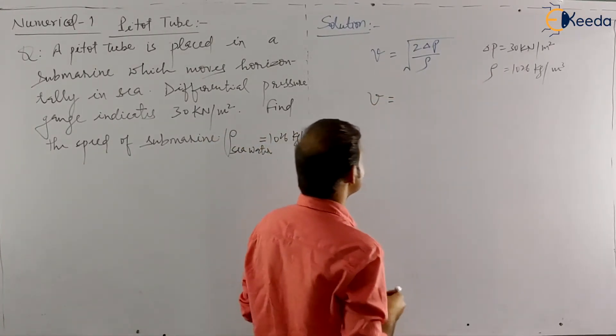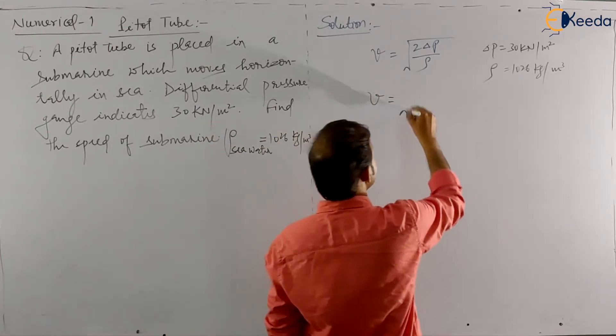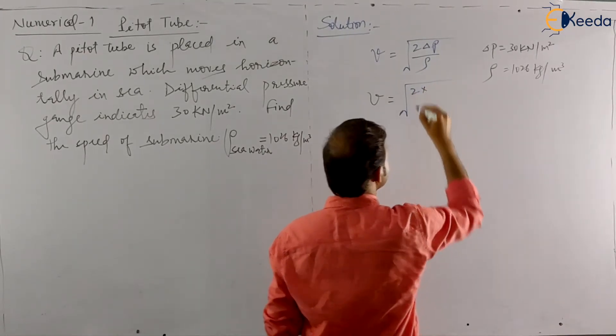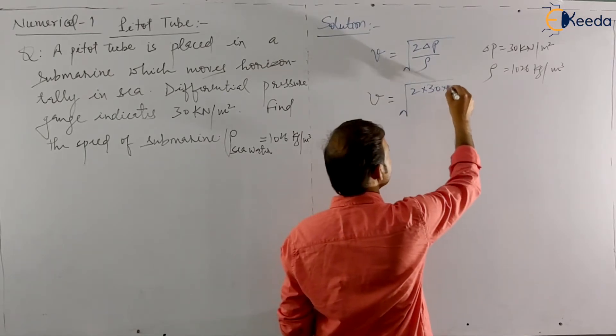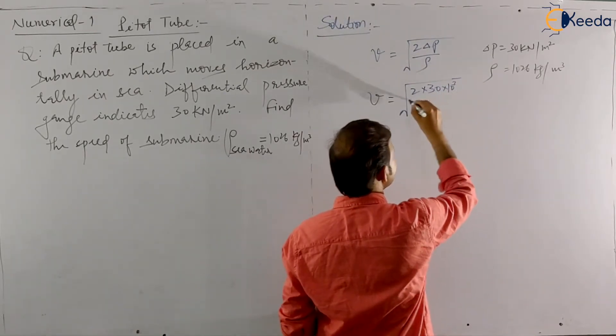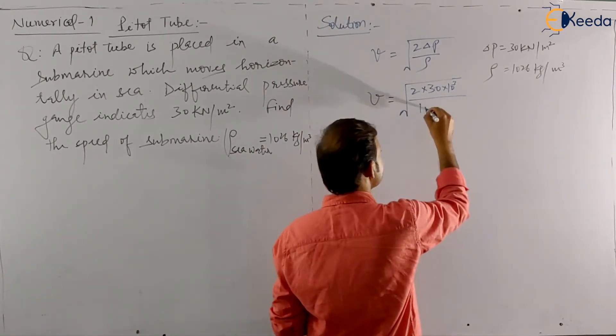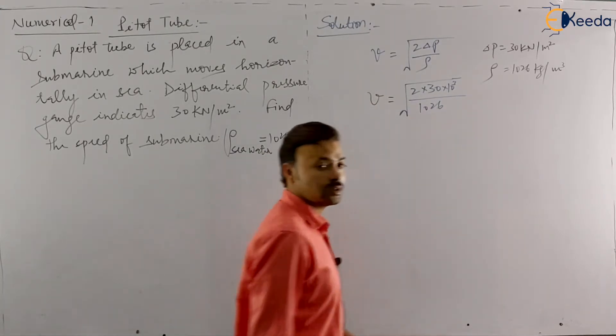So V will be under root 2 delta P. Delta P is 30 kN per meter square, 30 into 10 to the power of 3 divided by rho is 1026. Rho is 1026.